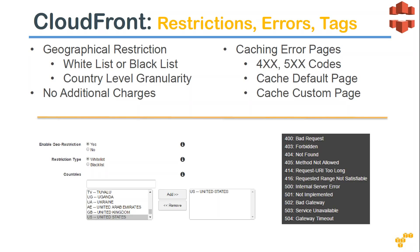For error pages and restrictions, the UI is very simple. You can whitelist or blacklist countries for content distribution at no additional charge. You can also decide what kind of error pages to show — instead of a 404, you can return an HTTP 200 response with a custom page, effectively hiding the error. Think of Facebook or Google — you rarely see a 404 page because they replace error messages with custom pages that keep users on the site.